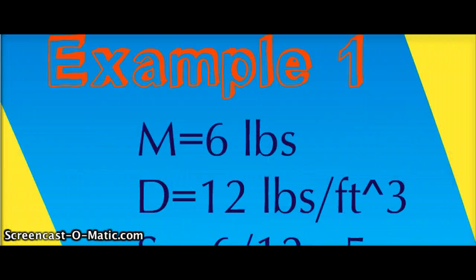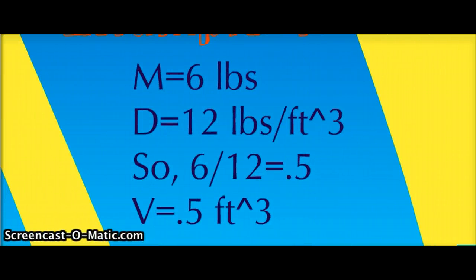Example number 1 of volume. If the mass of an object is 6 pounds and the density is 12 pounds per feet cubed, the volume is 0.5 feet cubed.